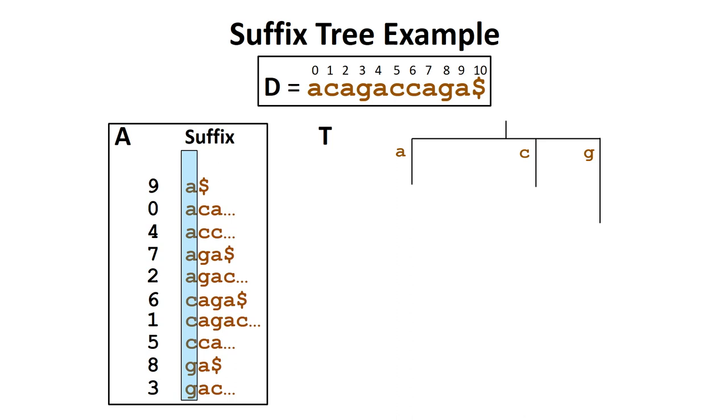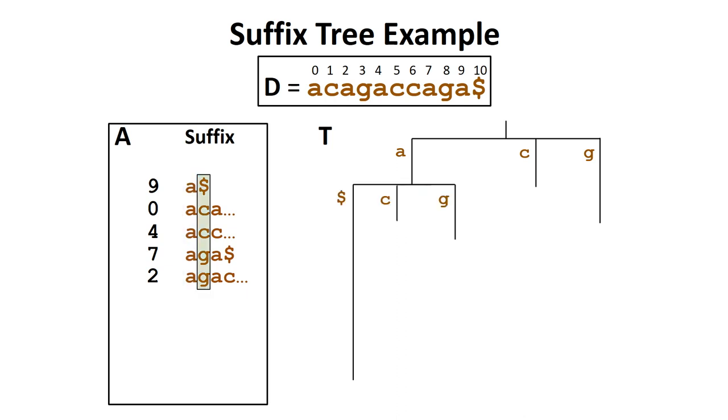For the subset of suffixes that begin with an a, the second column consists of the dollar sign, c, and g. This means we will create three branches at the second level of the tree. When we reach the dollar sign, we will record the position in the leaf of the tree. In this case, we will record the position 9 for the suffix a dollar sign. We can repeat this process to construct the rest of the subtree for the suffixes that begin with an a.